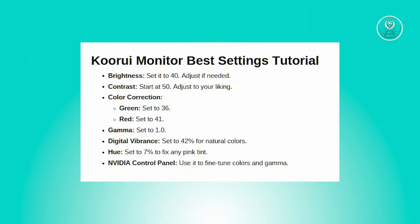Next is adjusting your gamma. Gamma affects the overall brightness and contrast balance. Navigate to the gamma settings in the monitor's menu and set it to the default value, which is commonly 2.2 or the standard preset provided in the monitor settings.